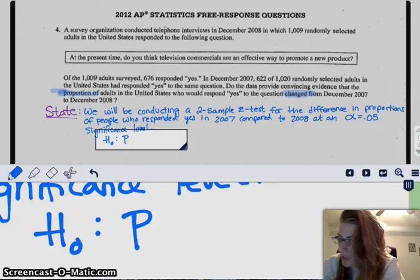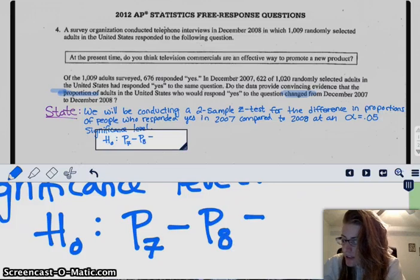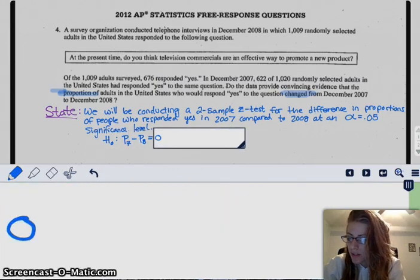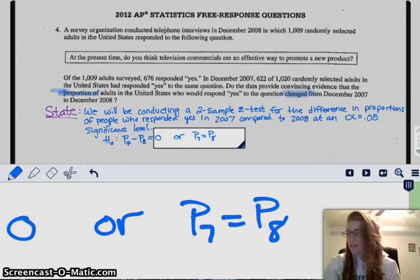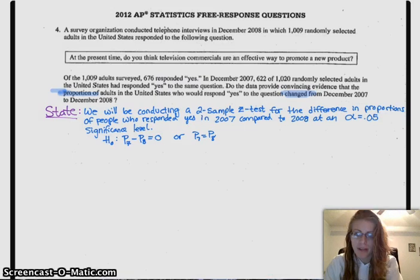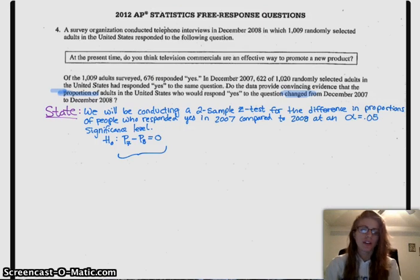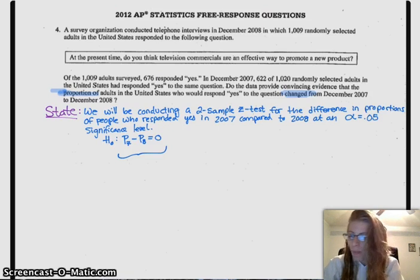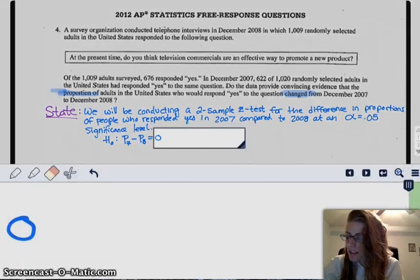So my null hypothesis is that P7 minus P8 is equal to zero. So that means that the difference between the two proportions is the same. Another way to write this, you can also say that P7 equals P8. Either of those hypothesis tests are equivalent. The reason I usually give you guys this one is because that is your true parameter. That's the mean of the sampling distribution, and so it relates to the actual math of it a little bit better. But if it helps, you can do that they equal each other.